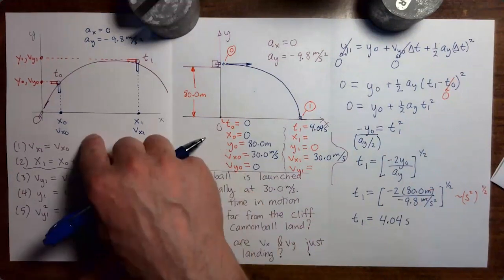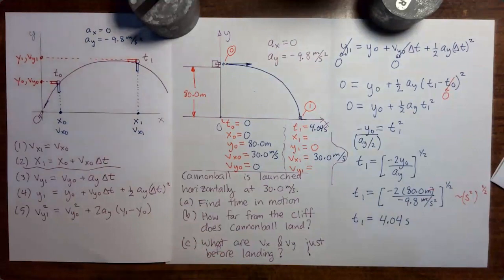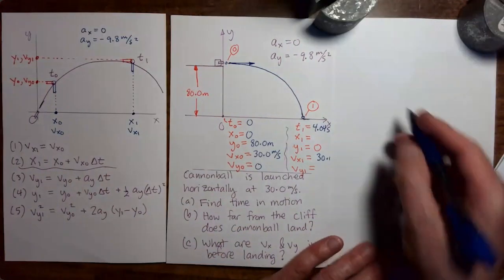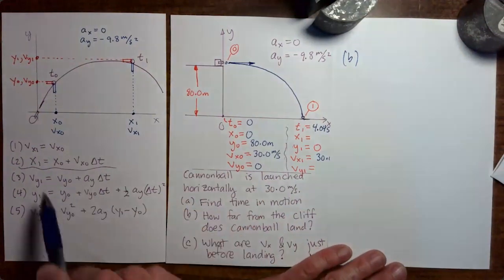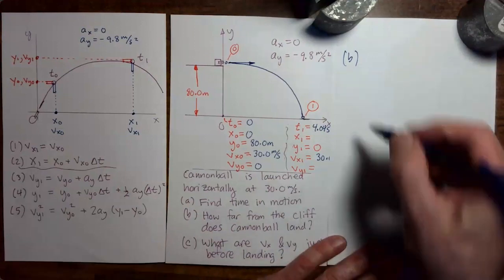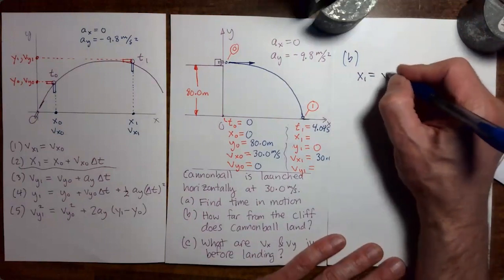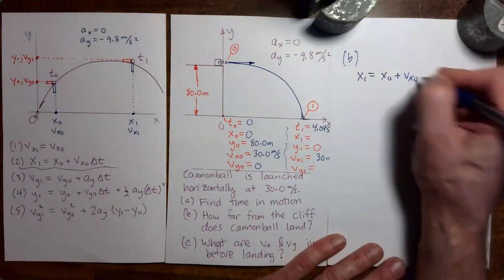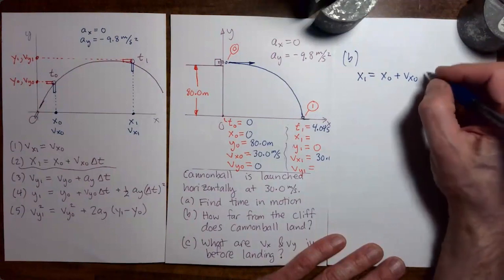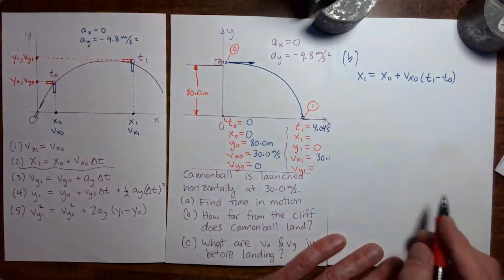So see if you can scan the list of equations and find an equation where the only unknown is x1 and everything else is known. If you look at the list of equations here, the only one that has x1 in it is 2. So I guess we better hope that that works. So let's try that now. x1 equals x0 plus vx0 times delta t. I'll expand the delta t as t1 minus t0.